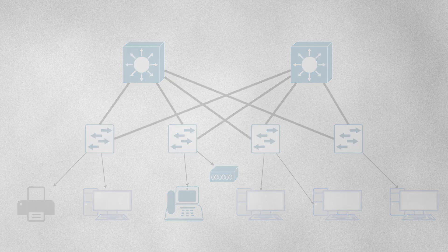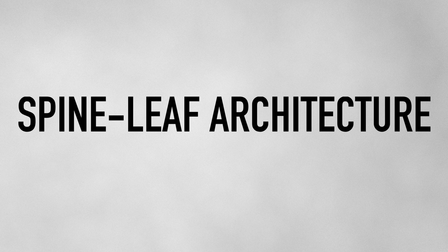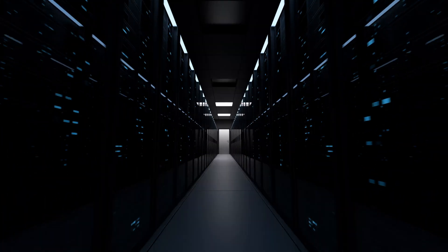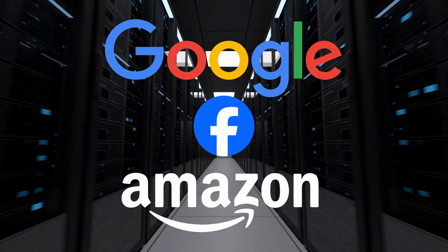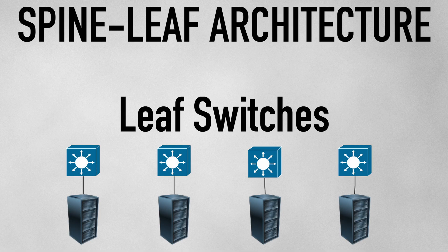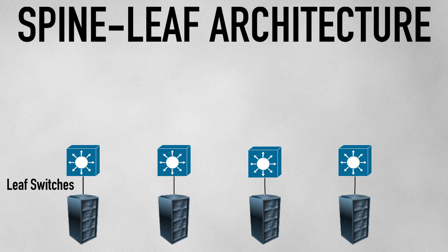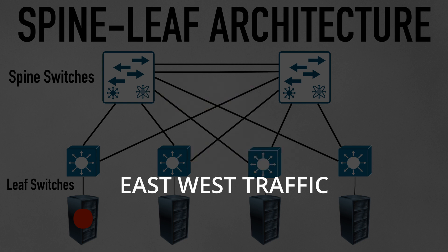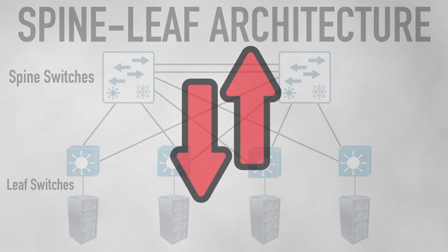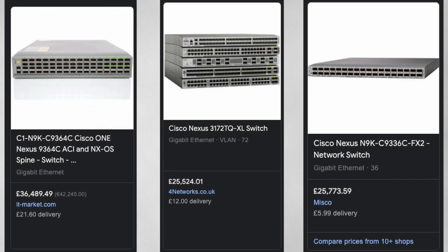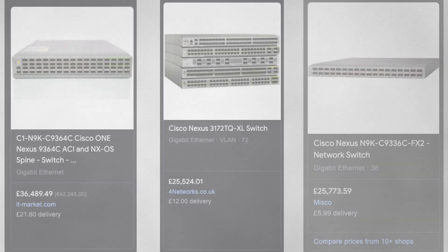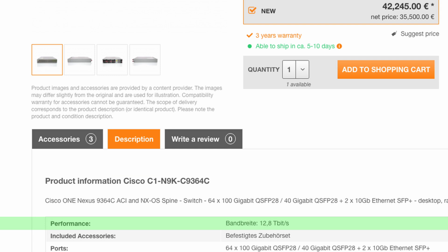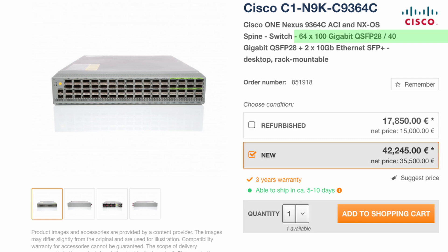There is another type of network topology called spine-leaf architecture, found in most modern data center networks — the likes of Google, Facebook, and Amazon. The leaf switches are where host devices such as servers are connected, and these leaf switches are connected to the spine switches in a fully meshed configuration. This allows a server to communicate with another server within a couple of hops — called east-west traffic. North-south is data flowing in and out of the data center. The spine-leaf architecture is very expensive; spine switches can cost tens of thousands, with one offering 12.8 terabits per second of bandwidth and each QSFP capable of 100 gigabits per second.